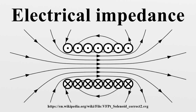For a resistor, there is the relation given by Ohm's law. Considering the voltage signal to be a complex exponential, it follows that the ratio of AC voltage amplitude to alternating current amplitude across a resistor is R, and that the AC voltage leads the current across a resistor by zero degrees. For a capacitor, considering the voltage signal to be a complex exponential, the ratio of AC voltage amplitude to AC current amplitude across a capacitor is 1 over omega C, and the AC voltage lags the AC current across a capacitor by 90 degrees. This result is commonly expressed in polar form.